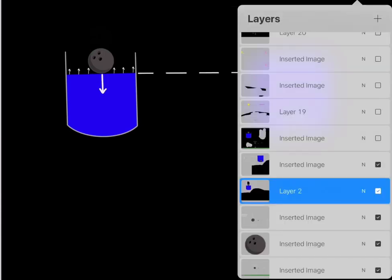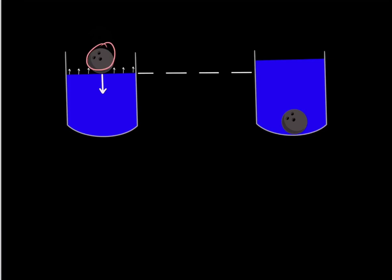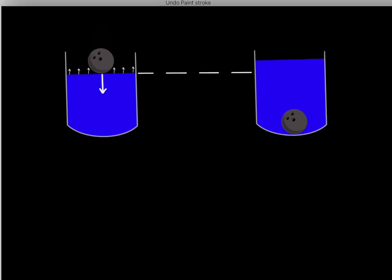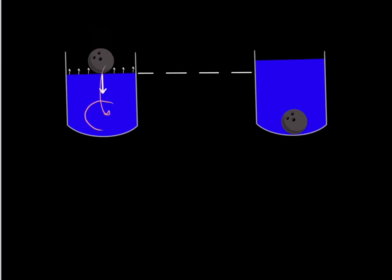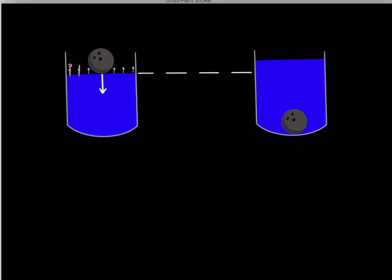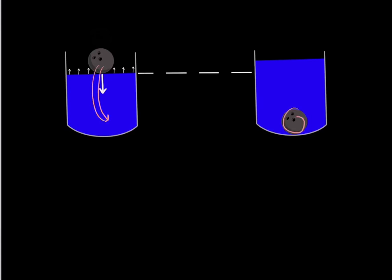So what would happen if we take this bowling ball and drop it into this liquid? Again, this bowling ball has mass, so it's going to want to fall to a lower level. However, this bowling ball also has volume, so if it falls into this liquid, it's going to lift up the liquid. It will displace a certain volume of liquid, and that liquid is therefore going to be lifted up.